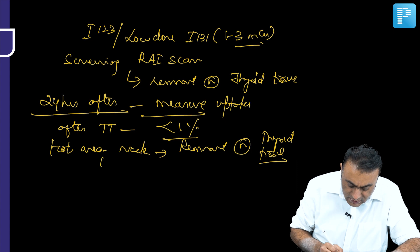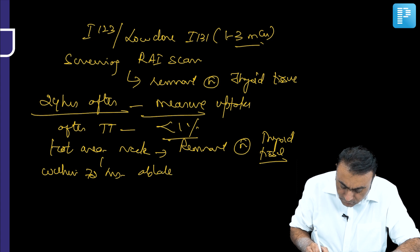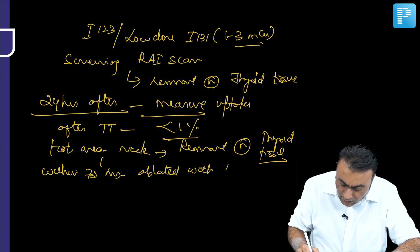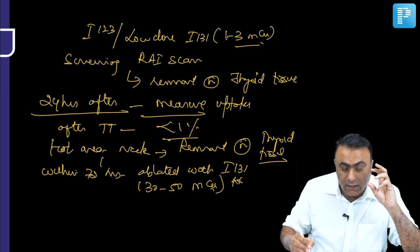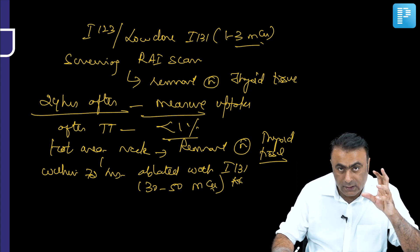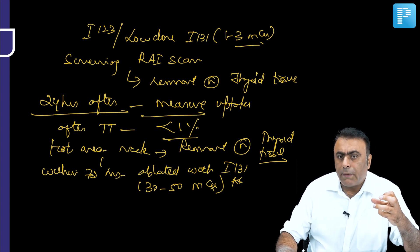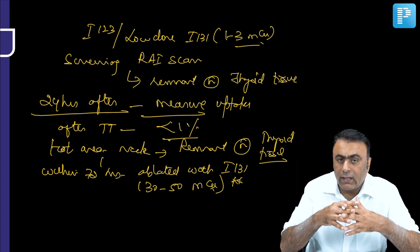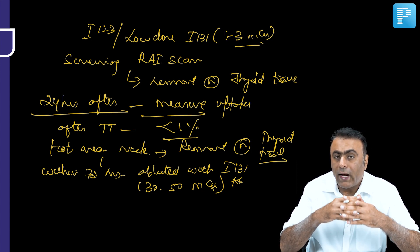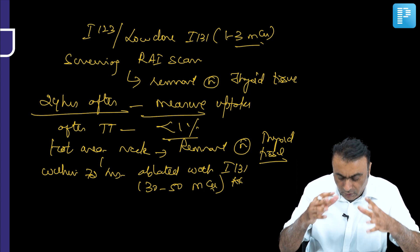Once remnant normal thyroid tissue is detected, within 72 hours it should be ablated with iodine-131. The dose for ablating remnant normal thyroid tissue is 30 to 50 millicuries — this is important to remember.